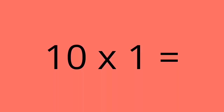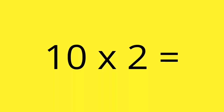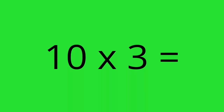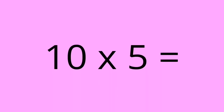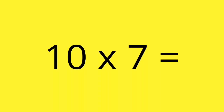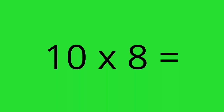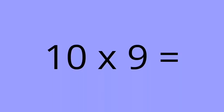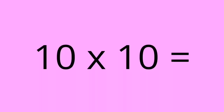10 times 1 equals 10. 10 times 2 equals 20. 10 times 3 equals 30. 10 times 4 equals 40. 10 times 5 equals 50. 10 times 6 equals 60. 10 times 7 equals 70. 10 times 8 equals 80. 10 times 9 equals 90. 10 times 10 equals 100.